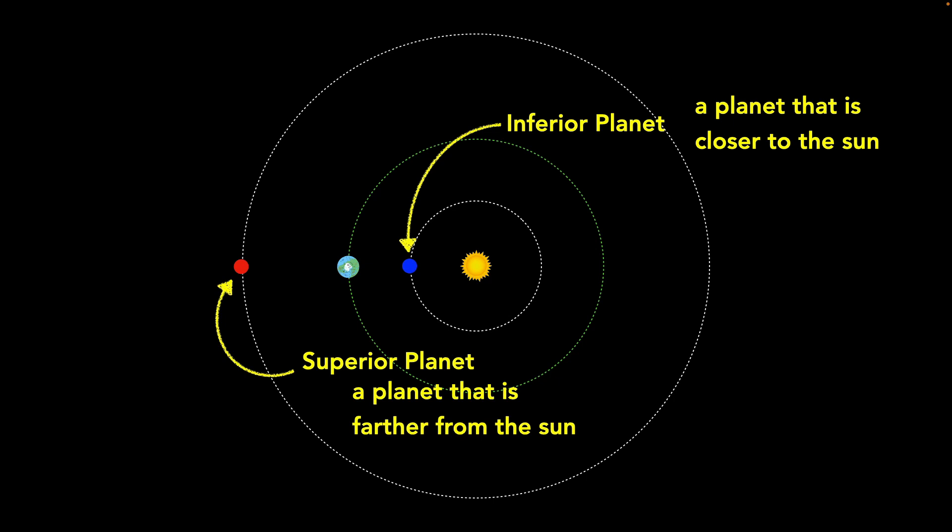In our solar system, Mercury and Venus are both inferior planets, and Mars, Jupiter, Saturn, Uranus, and Neptune are all superior planets.